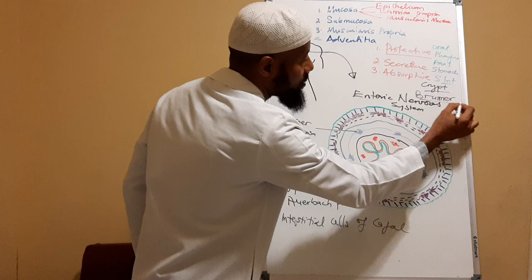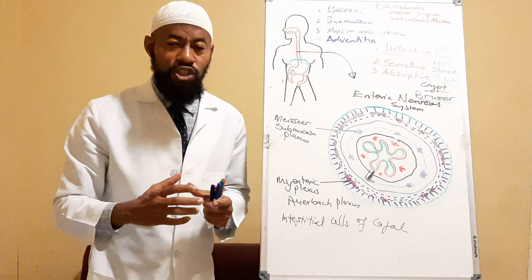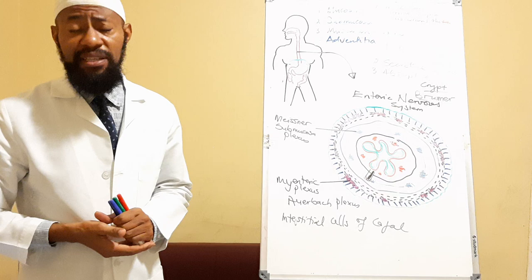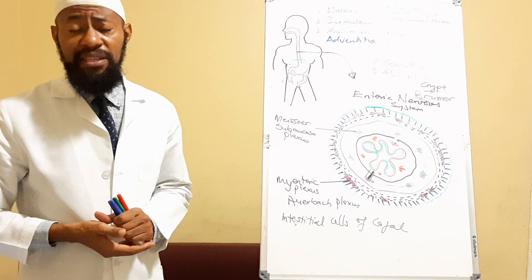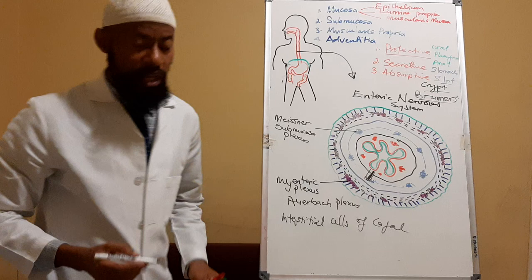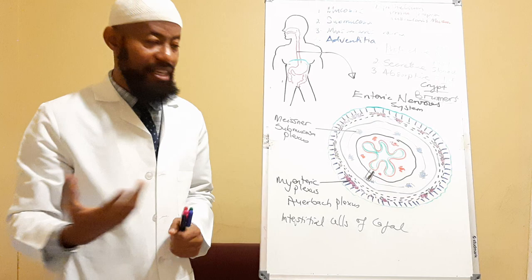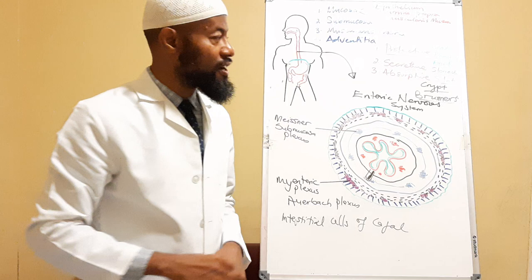The major histological difference between the duodenum and the other two parts of the small intestine — the jejunum and the ileum — is the presence of Brunner's glands. Brunner's glands are found only in the duodenum. Sometimes you can have hyperplasia of the Brunner's glands as a result of increased release of gastric content or food with a lot of acid into the duodenum.